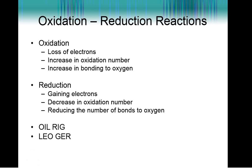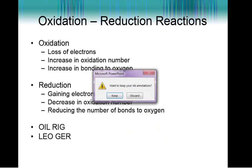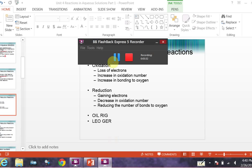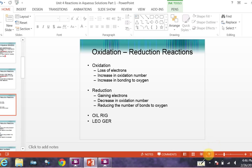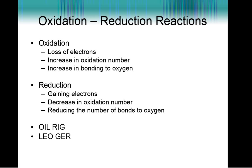Now we need to define what oxidation and reduction mean. Oxidation means that you are losing those negatively charged electrons. It is an increase in oxidation number or an increase in bonding to oxygen atoms. Reduction is gaining electrons, which are negatively charged. It is a decrease in oxidation number or it is reducing the number of bonds to oxygen.